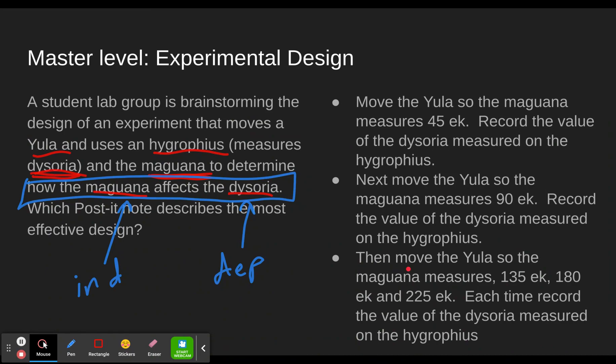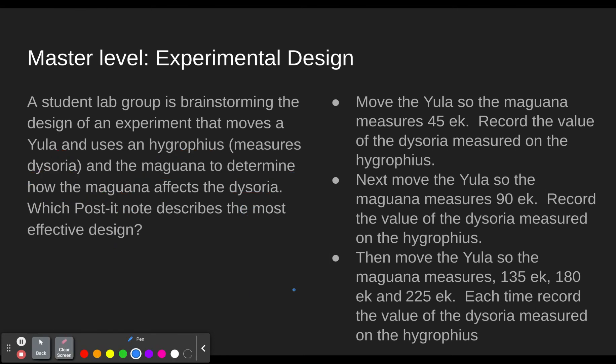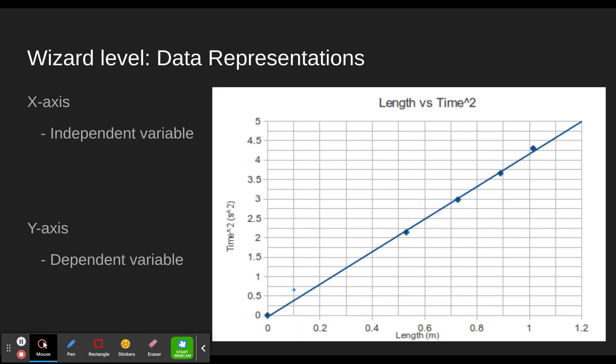So then let's move on to the wizard level. Clear that. And off we go. There we go. So the independent variable is, so here we're going to be working towards making a graph of our data. So we've got our maguana and we've got our dysoria or whatever it might be. And now we have to turn it into a graph so that somebody can look at our data and very quickly see what the relationship between these two things is.